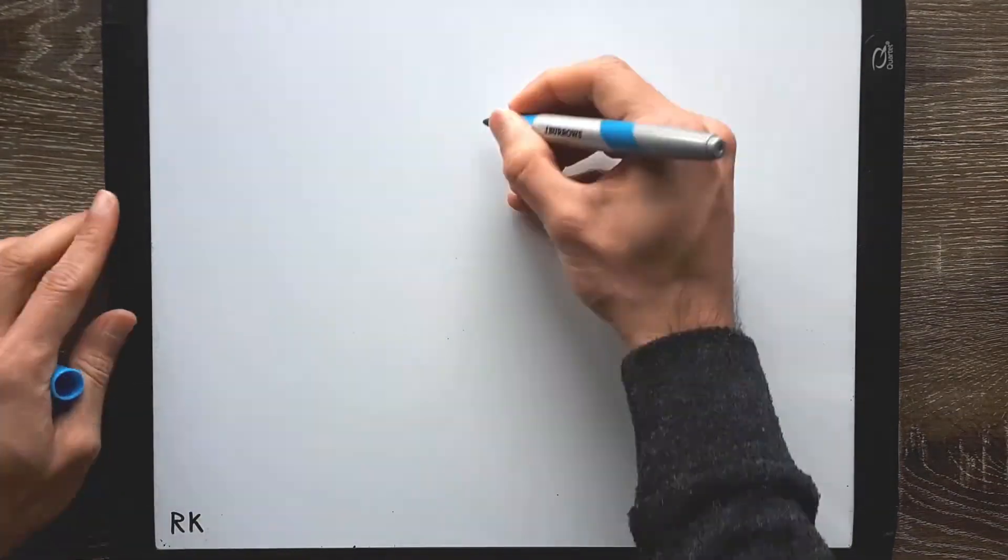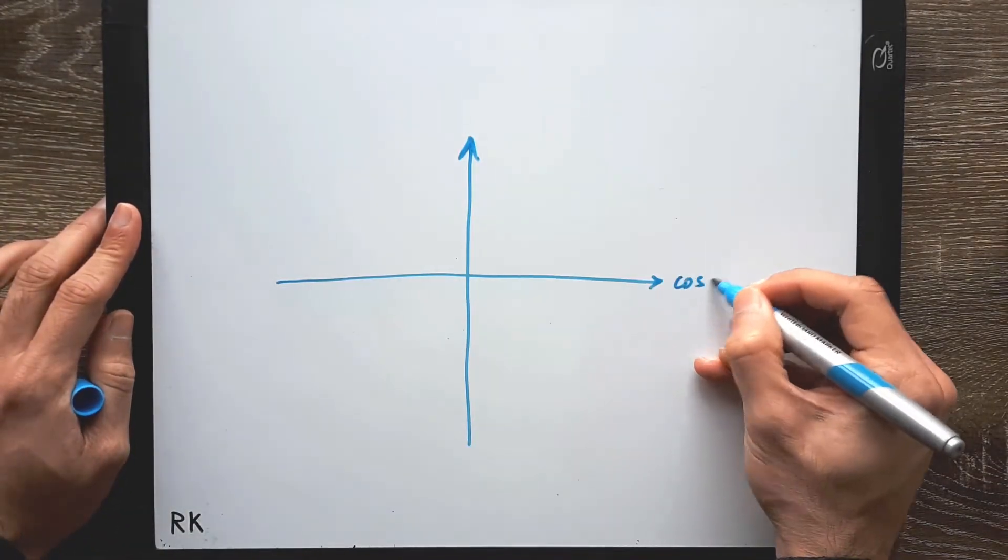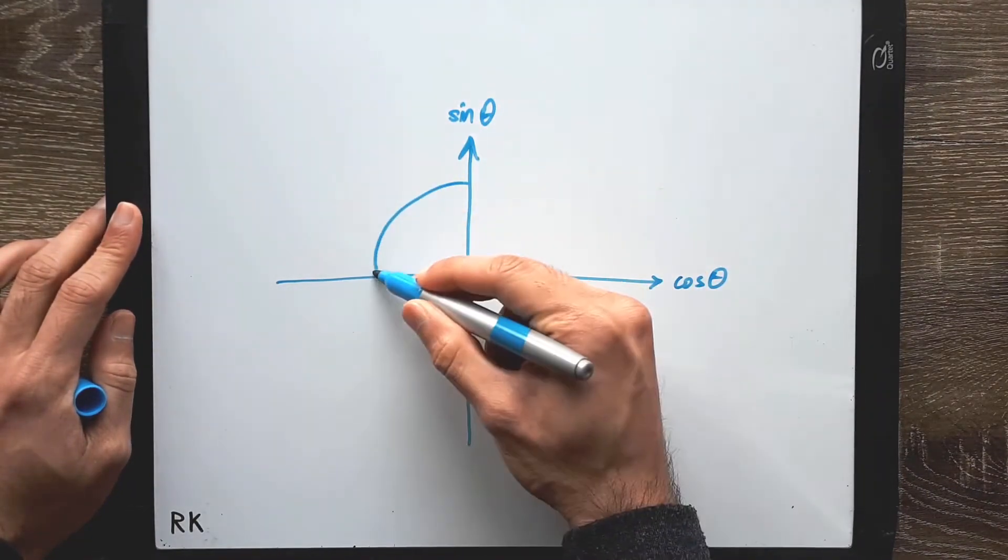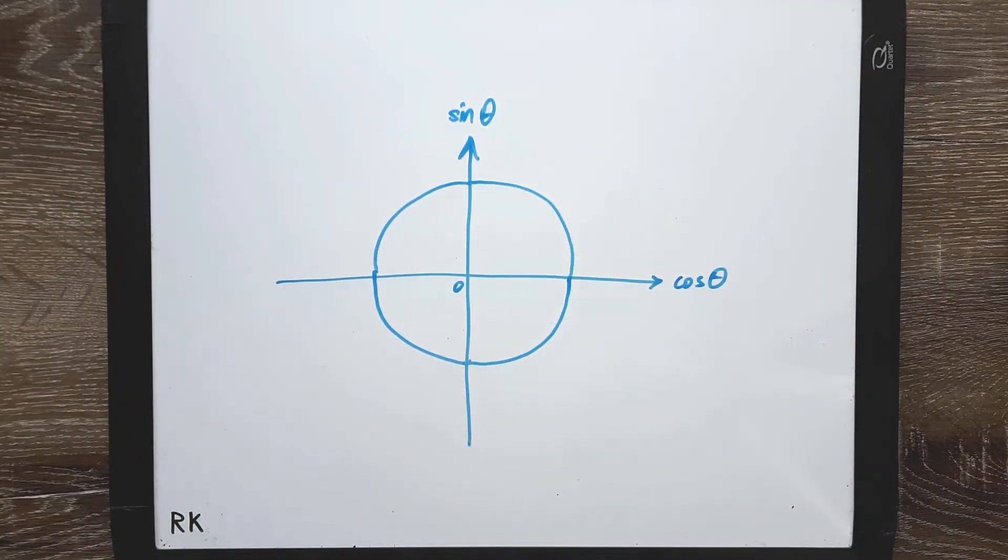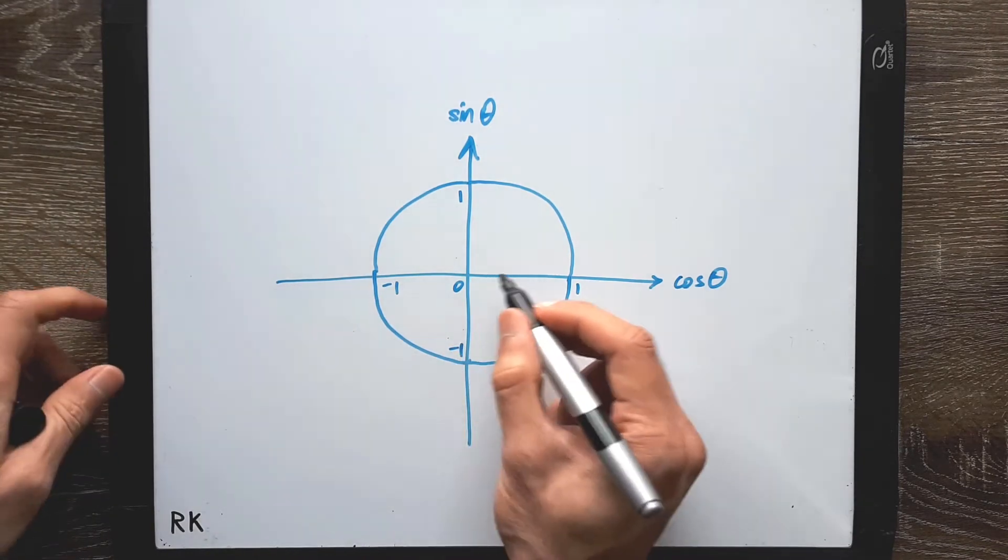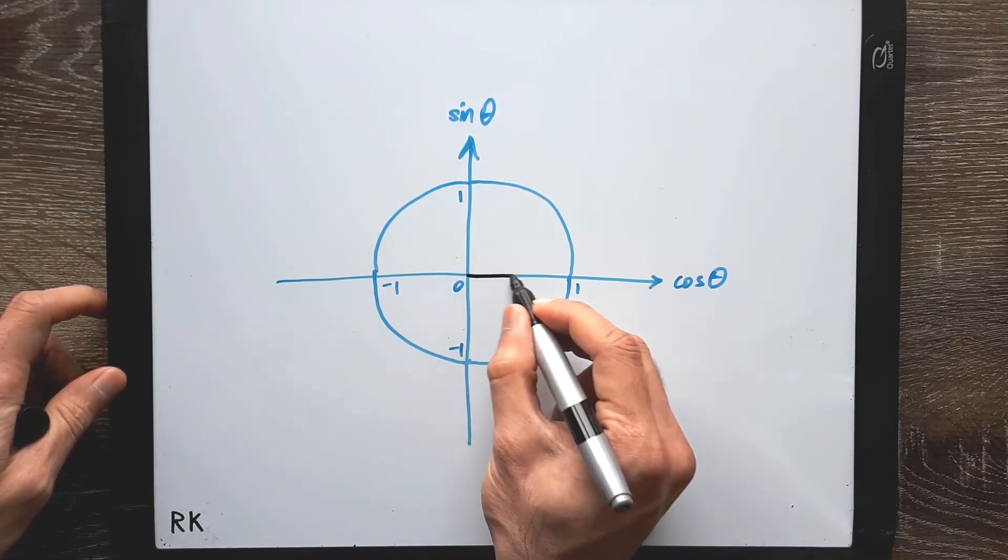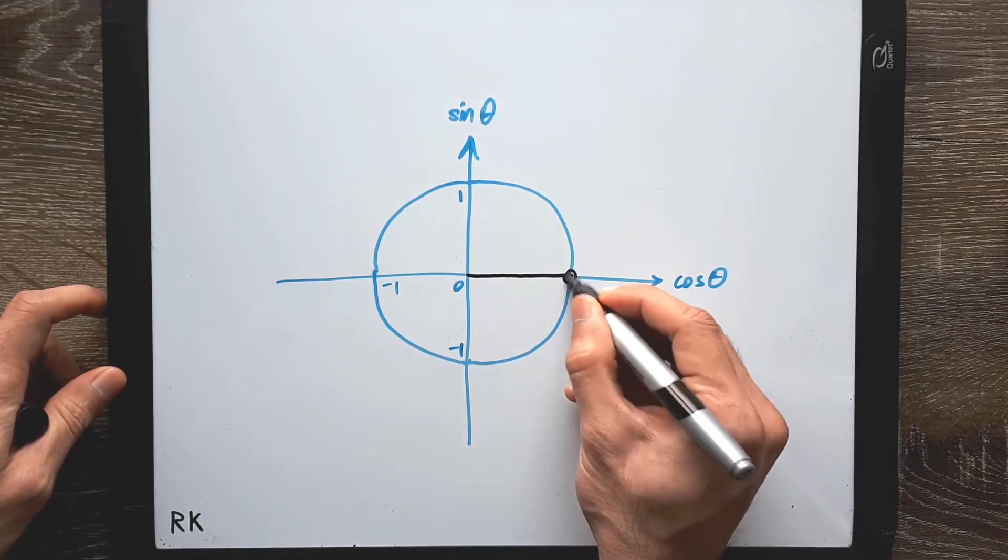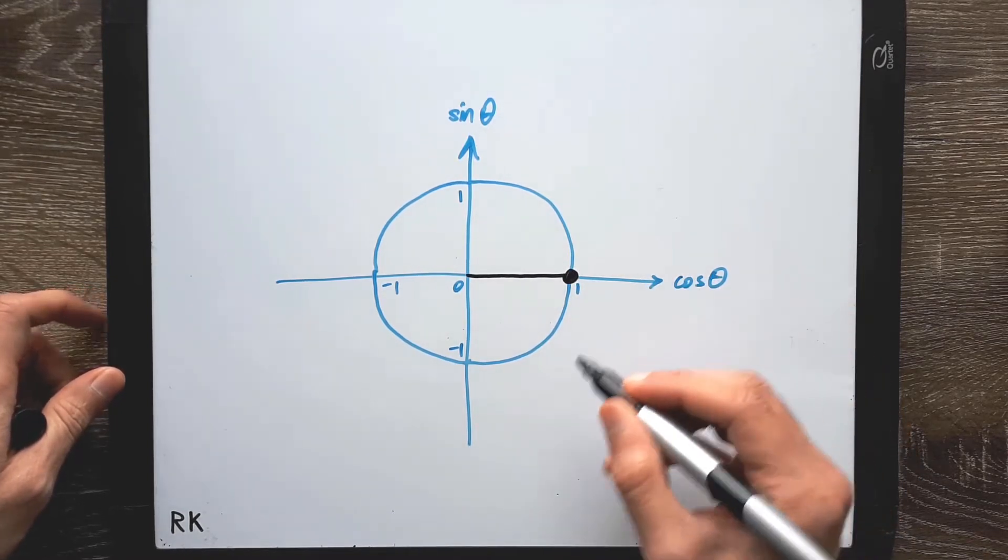This is much easier to do on a unit circle, because it's conveniently placed at the origin, allowing you to use the axes to see the quadrantal angles. As part of standard convention, the rightmost point on the unit circle has an angle of 0 degrees, so this is where everything rotates from.